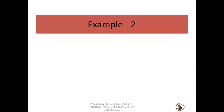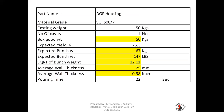Now we go to the second example, which is a similar casting of 50 kg, one cavity, expected yield of 75%, and an expected bunch weight of 67 kg — that is 147 LBS. The square root of the bunch weight is 12.11, same as example one. The difference is in the wall thickness.